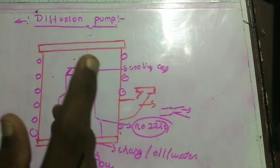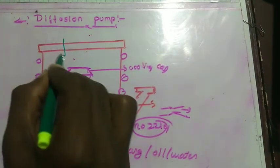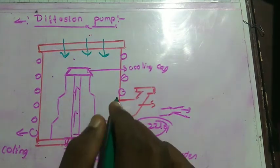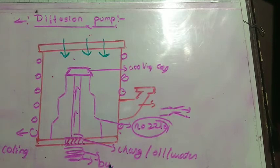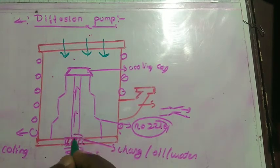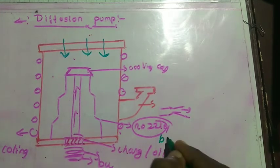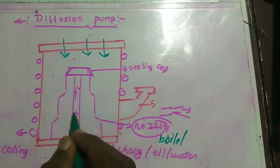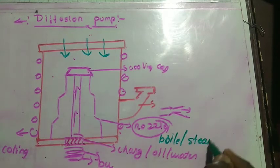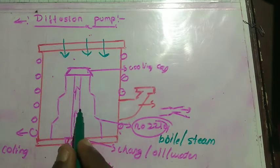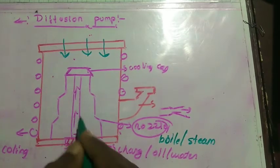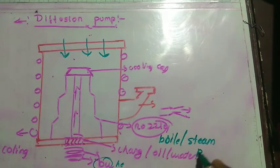Now let's look at the working of the diffusion pump. This is the inlet from which the fluid enters into the outer frame. When the heater is on, the charge present in the chamber tries to burn. When it reaches boiling point, evaporation of the charge occurs. A lot of evaporation produces steam, and on applying high temperature and high heat, this steam is converted into pressurized steam.